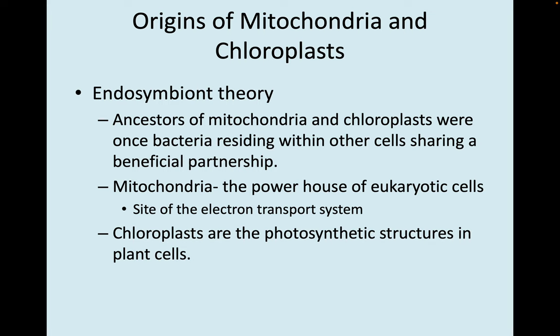The origins of mitochondria and chloroplasts are fascinating — we call this the endosymbiont theory. This is the theory that ancestors of mitochondria and chloroplasts were once bacteria residing within other cells, sharing a beneficial partnership. Mitochondria, the powerhouse of eukaryotic cells, is the site of the electron transport system where cell respiration happens. Chloroplasts are the photosynthetic structures in plant cells. They used to be free-living prokaryotes but were engulfed by a eukaryotic cell, and instead of being digested, they developed a symbiotic relationship benefiting both.